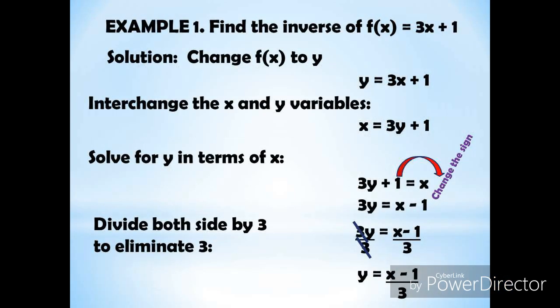Example number one: find the inverse of f(x) = 3x + 1. The solution is to change f(x) to y, so it becomes y = 3x + 1.